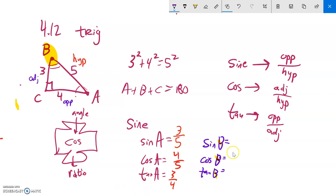So now if I do these ones, sine of B, let me look it up. Sine is opposite over hypotenuse. So here's angle B, opposite over hypotenuse, 4 fifths. Cosine is adjacent over hypotenuse. Adjacent over hypotenuse, 3 fifths. And tangent is opposite over adjacent. Opposite over adjacent, 4 thirds. Great.